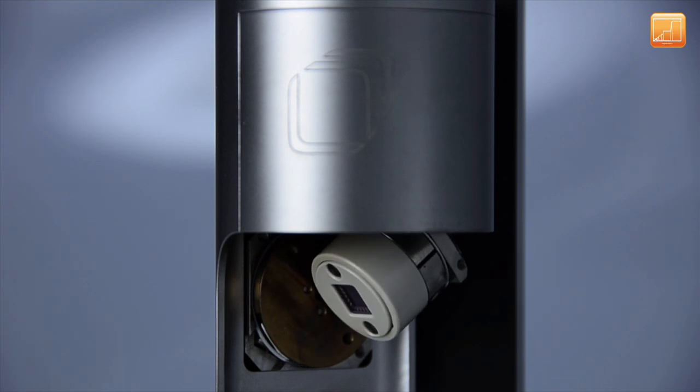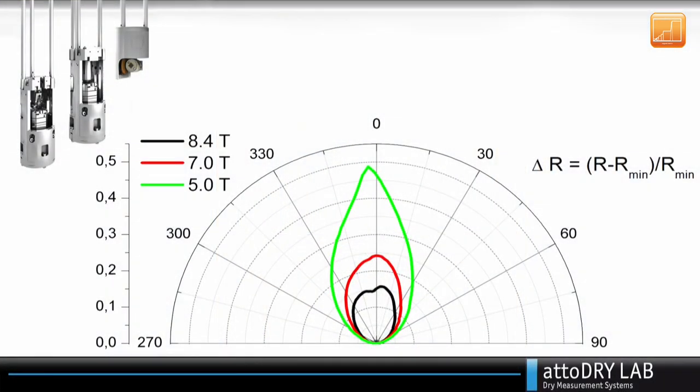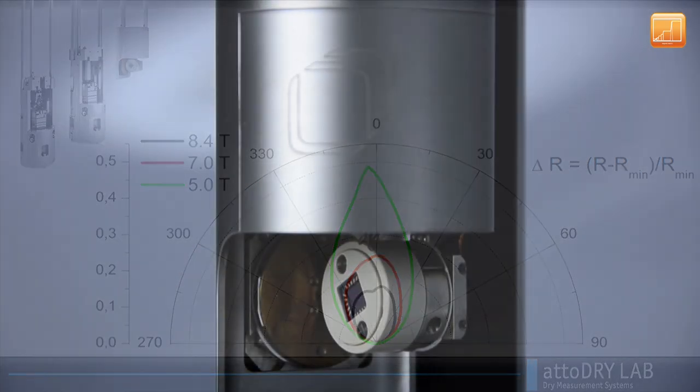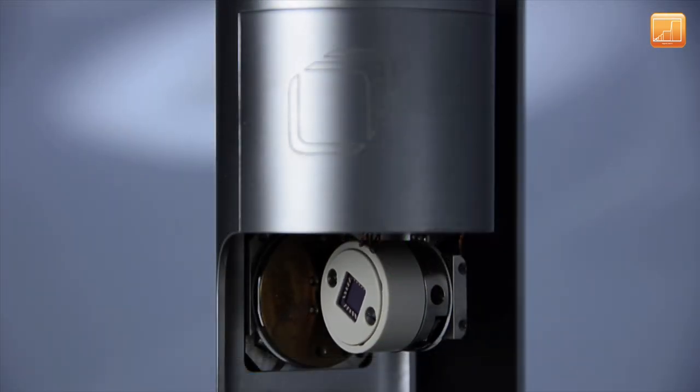The Atto3DR double rotation module provides access to the full magnetic field in all directions relative to the sample surface, making expensive vector magnets obsolete.